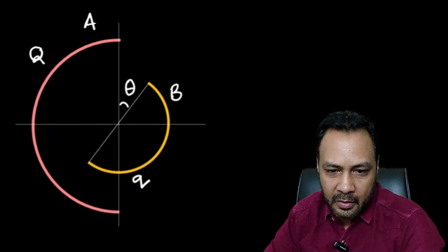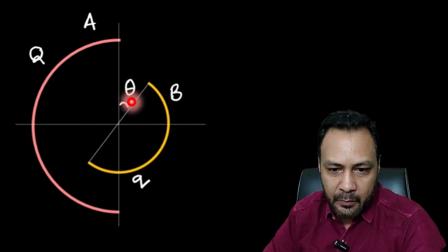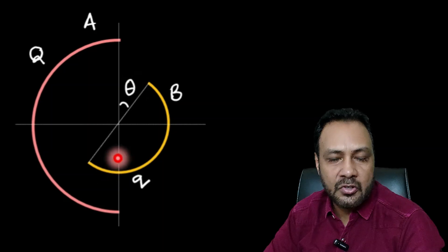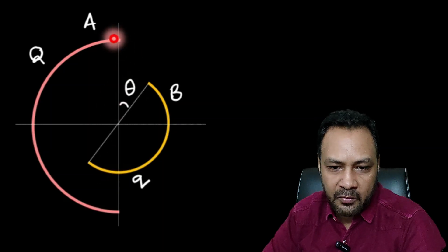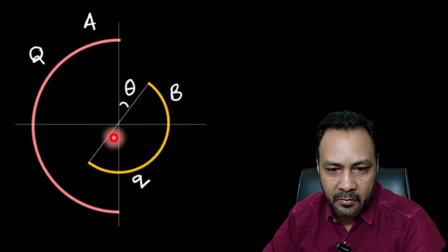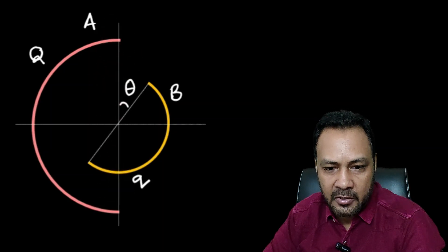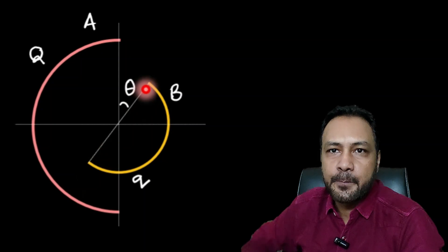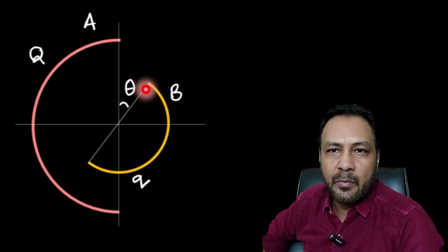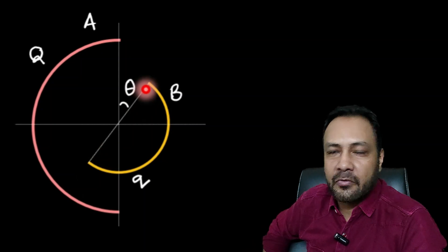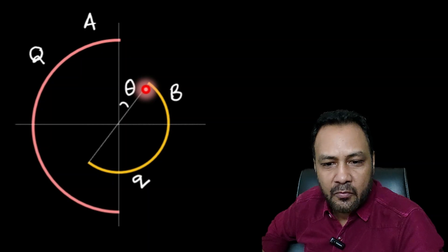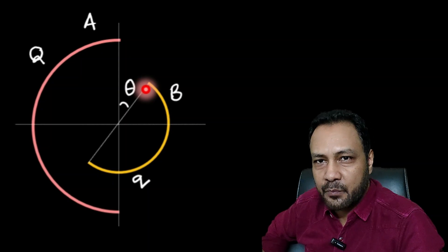They can be randomly oriented. I have taken an orientation in which the flat plane of hemispherical shell A and the flat plane of hemispherical shell B make an angle theta with each other. I want to find only the force on B due to A.